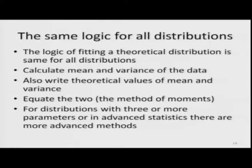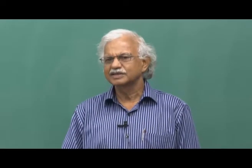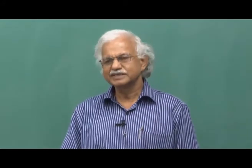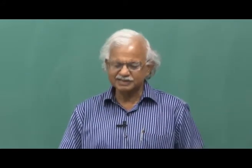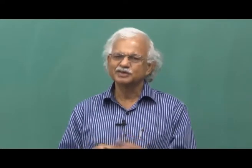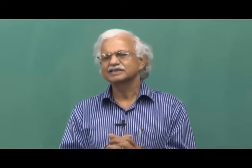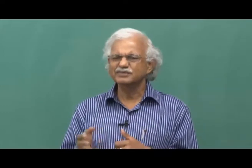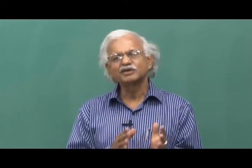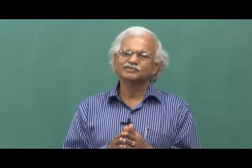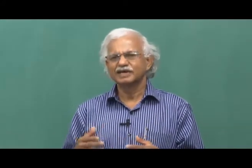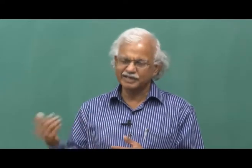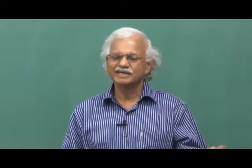For distributions with three or more parameters, in advanced statistics there are more advanced methods — the method of least squares, the method of maximum likelihood estimation. Since our purpose is only to demonstrate to sociologists how and where to make use of statistical methods, it is sufficient here to say that by equating mean and variance of the empirical distribution with the unknown constants of the model, you can estimate their values.